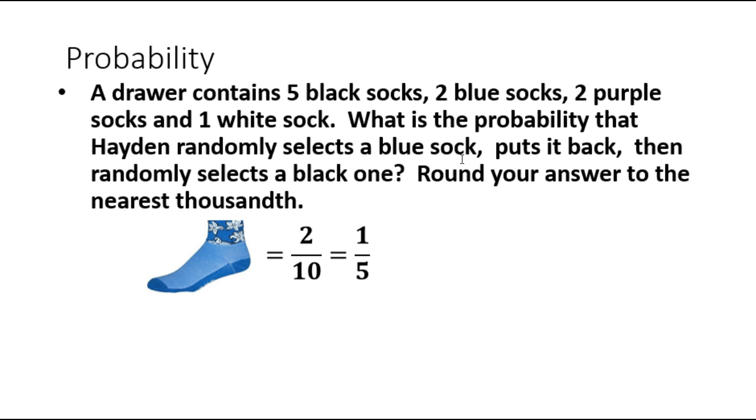Okay, now he puts it back then randomly selects a black one. Putting it back is important because if he puts it back now we have ten socks to choose from again. If he were to have kept it we would only have nine socks and that would change our probability on our total possible on the black ones. But in this case he put it back.